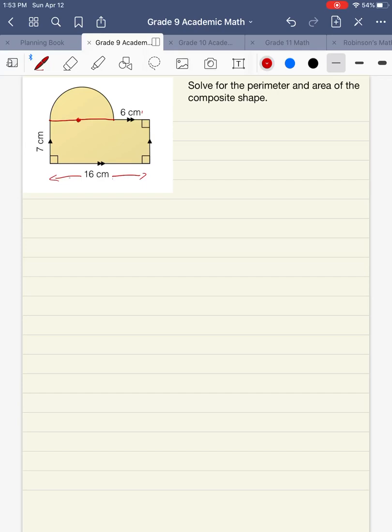So if we do 16 minus 6, we're going to get 10. So this tells us that this portion right across here is going to be 10 centimeters. And that means that the radius of our semicircle is going to be 5.